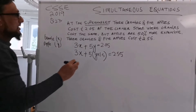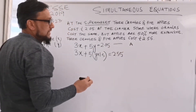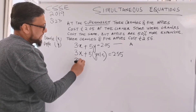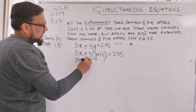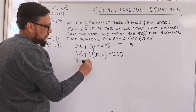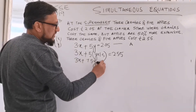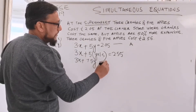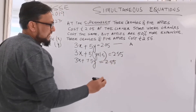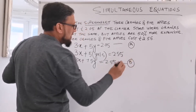So this is equation A: 3x plus 5y equals 2.05. And equation B is: 3x plus 7.5y equals two pounds and fifty-five pence. This is equation number B.